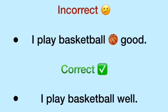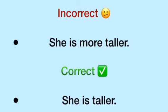Next: 'She is more taller.' Just as we saw with 'more stronger' earlier, the correct sentence is: 'She is taller.' — 'More' is not added with comparative adjectives.